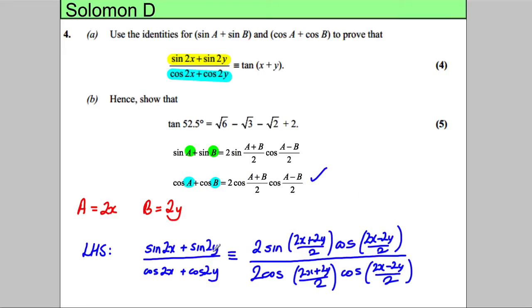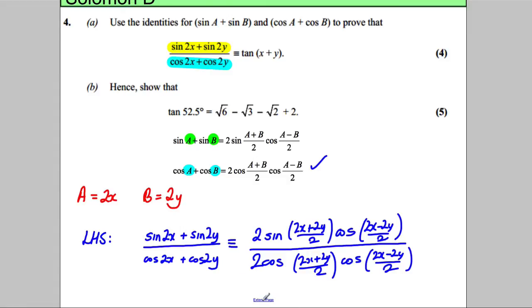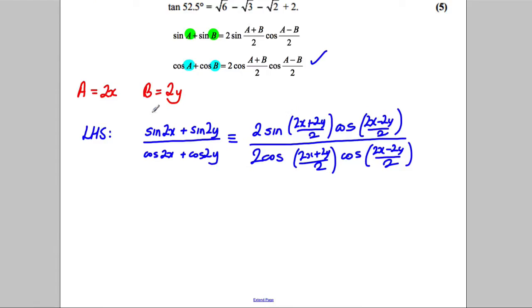So we haven't done much here apart from realise that A had to be 2X and B had to be 2Y. Now I can do a bit of simplifying here. This here can be just X plus Y. This is X subtract Y, and the 2's cancel.